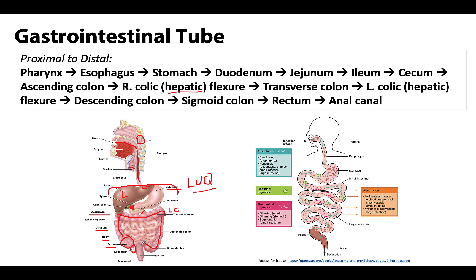As soon as the large intestine begins to straighten out and head inferiorly, we are getting into the rectum. The rectum can increase in caliber in this region, particularly at the rectal ampulla, which occurs right before the transition into the anal canal at the pelvic diaphragm.